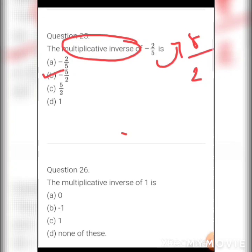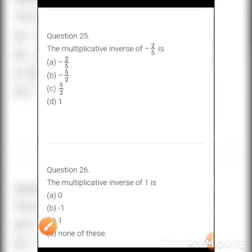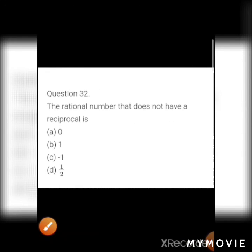MCQ 15: The multiplicative inverse of 1 is — inverting 1 always gives 1. Options: a) 0, b) −1, c) 1, d) none of these. Answer: c) 1.